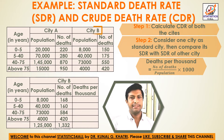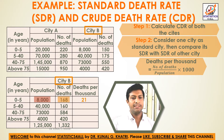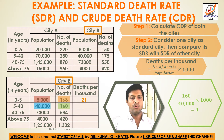Now for city B: 168 divided by 8,000 gives value 21. Then 160 divided by 40,000 gives value 4.